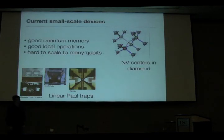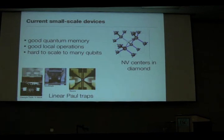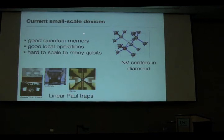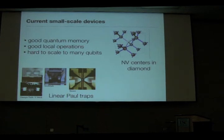To give an example picture of what's happening on the experimental side, I have two systems which are near and dear to my heart. These are some current small-scale devices — the scale here refers to the number of qubits involved. They have some nice properties already: good quantum memory and good local operations. But it's very hard to scale these actual systems to many qubits.